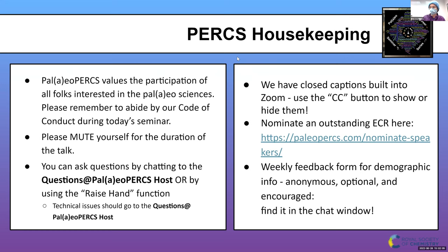You should not be able to unmute yourself. However, if you find yourself unmuted, please mute yourself and remain muted for the duration of the talk. You can ask questions by chatting to the questions at Paleo Perks host, or at the end of the talk you can use the raise hand function and we'll let you unmute yourself to ask the question verbally. Any technical issues should also go to the questions at Paleo Perks host.